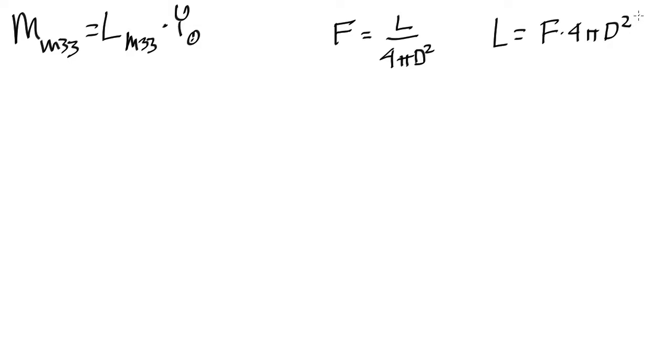So to make things easier for us, and so we don't have to put in the horrifically large numbers which are in astronomy, let's do a ratio so that we can compare to the sun so that we can make the calculation easier. So imagine I want to say, what is the luminosity of M33 divided by the luminosity of the sun?